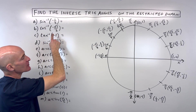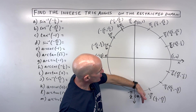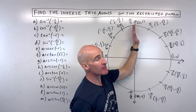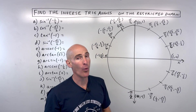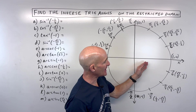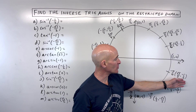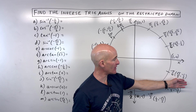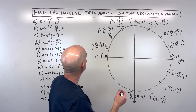To solve sine of what angle equals negative one-half, when you're working with sine, the domain is restricted from negative pi over two to positive pi over two. This way you're only going to get one answer. On the unit circle, sine refers to the y-coordinate. So where is y equal to negative one-half? That's going to be at negative pi over six.